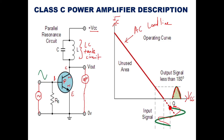The Class C amplifier is the most efficient power amplifier, which can produce more load power than either Class A or Class B. To amplify a sinusoidal signal, a Class C amplifier has to be tuned to the sinusoidal frequency — therefore it is also called a tuned amplifier. In place of a resistance, we use an LC tank circuit, which is tuned for a particular frequency as it is a resonance circuit.